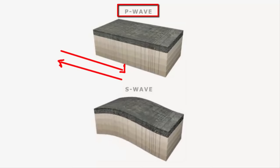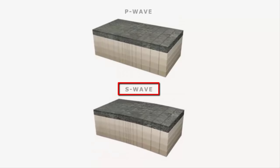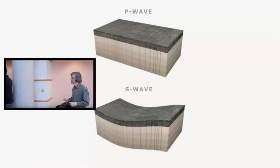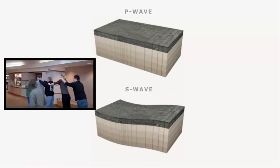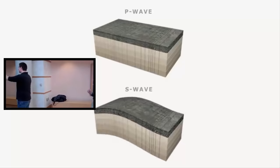The S wave, that is the secondary or shear wave, follows more slowly with a swaying, rolling motion that shakes the ground back and forth perpendicular to the direction of the wave. If the concept of P and S waves isn't clear, I recommend watching the video by Dr. Keith Miller, where he physically demonstrates P and S seismic waves. The video is extremely helpful. I'll link it in the description.